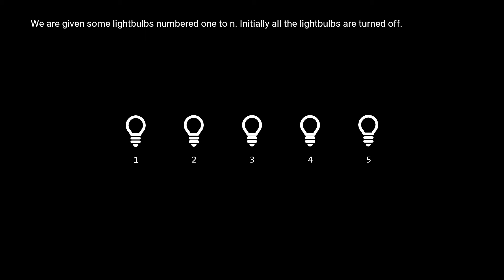Hello everyone. Today, our problem is that we're given some light bulbs numbered from 1 to n, and initially all the light bulbs are turned off. We're also given the order in which the light bulbs are turned on. This order is guaranteed to be a permutation of 1 through n, meaning each number from 1 to n will appear exactly once — no duplicates, and no numbers less than 1 or greater than n.